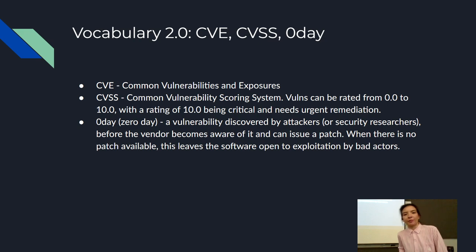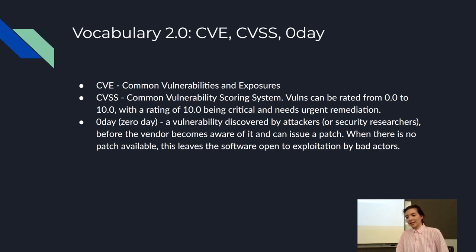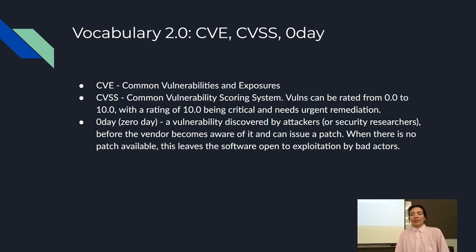Here's more vocabulary important to know once we've covered all the AppSec basics. CVE — Common Vulnerabilities and Exposures — is a database of every vulnerability that has ever been reported. CVSS — Common Vulnerability Scoring System — is a way that vulnerabilities can be rated.